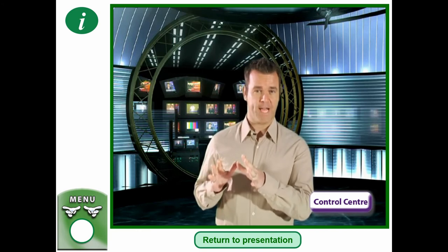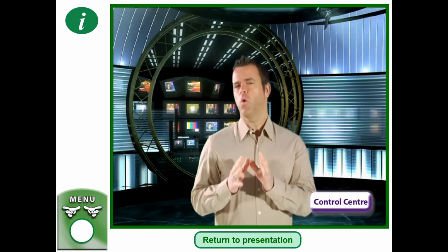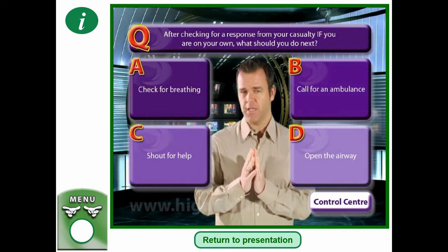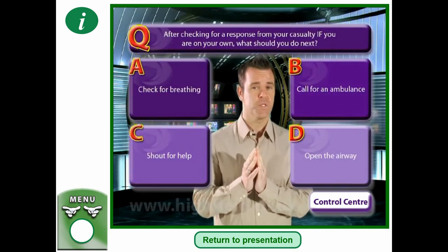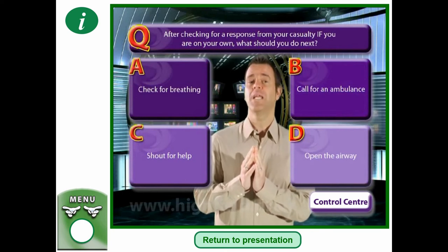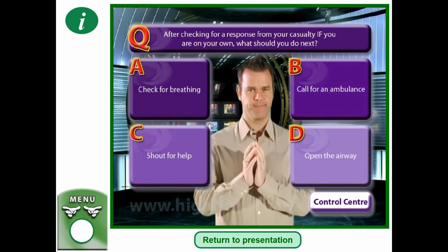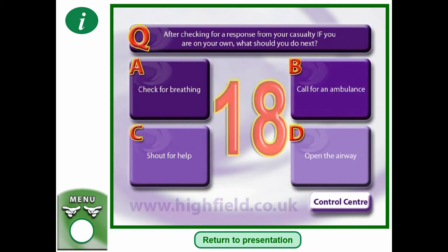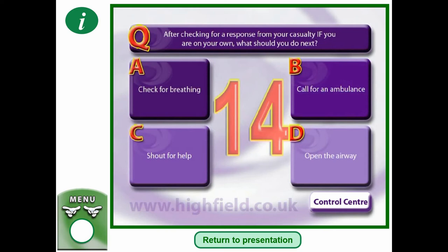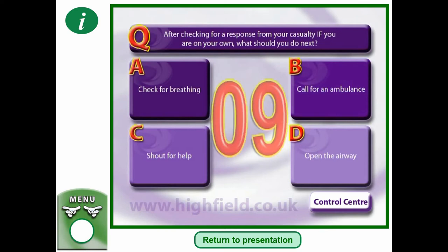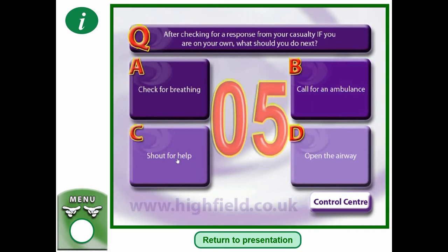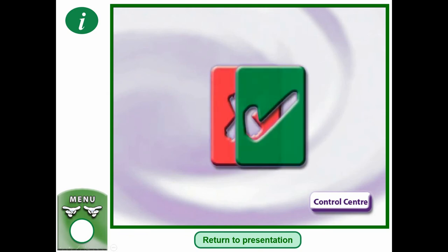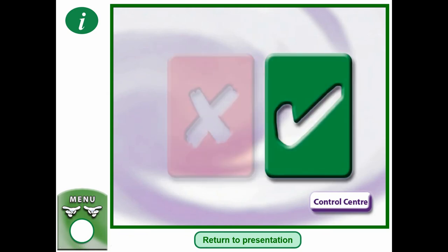After checking for a response from your casualty, if you're on your own, what should you do next? Is it A — check for breathing; B — call for an ambulance; C — shout for help; or D — open the airway? Pause the video and decide what you think. The next thing you should do is shout for help.